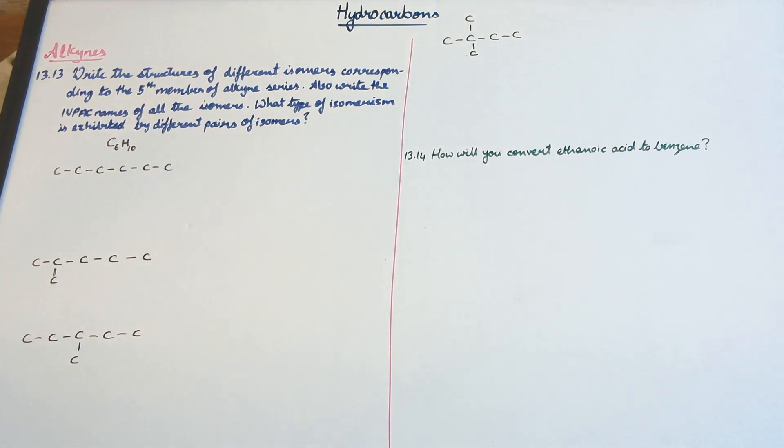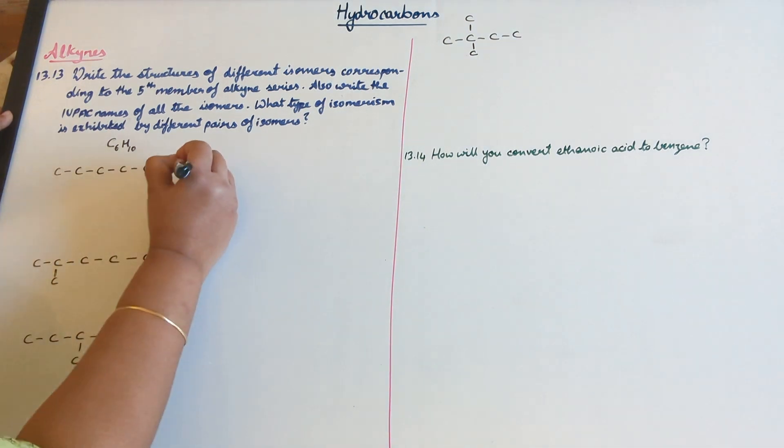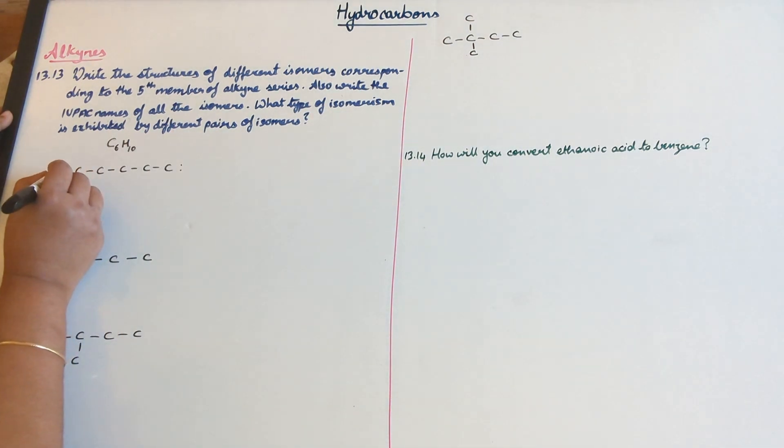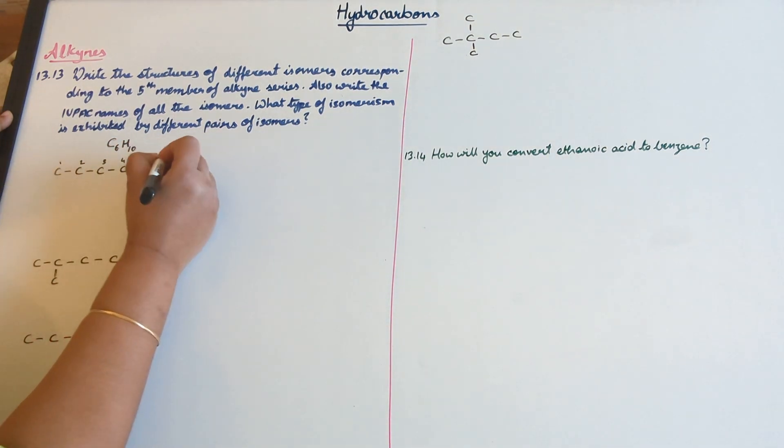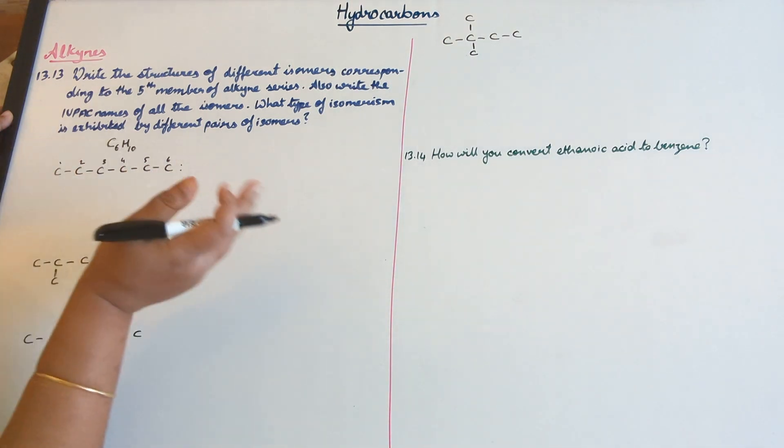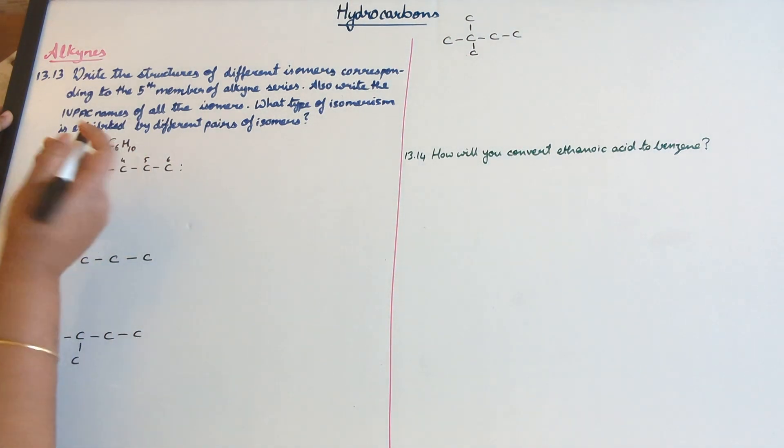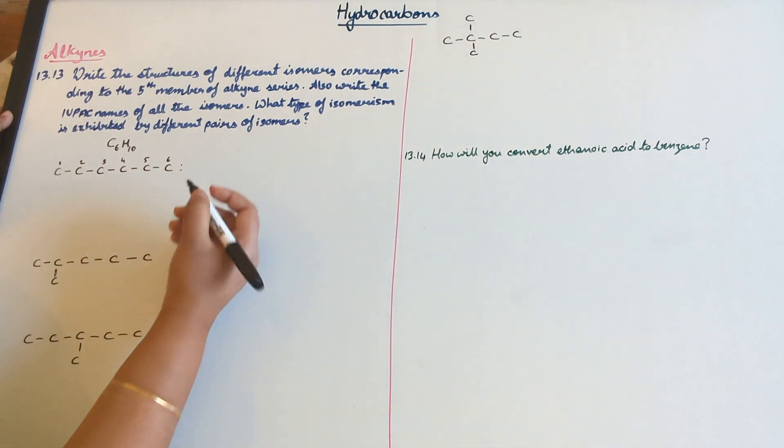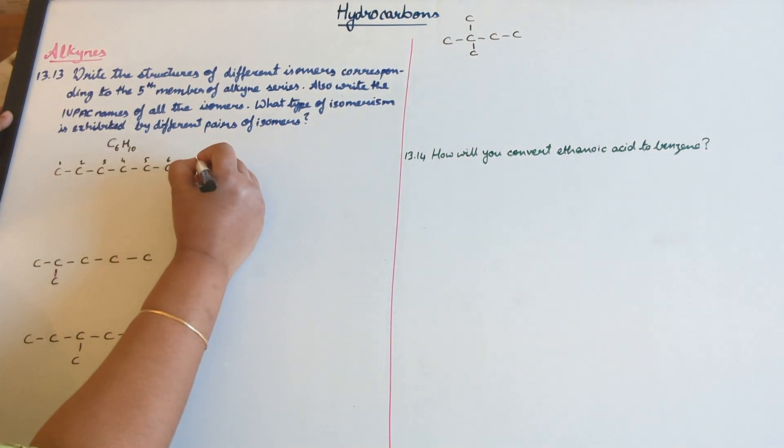So let's look at the isomers that are possible for the alkyne. Now the first one is going to have the carbon triple bond between the first and the second. Let me just number it. This is like we did it for the first question in this intext question for this chapter. I'm just numbering it for our convenience.